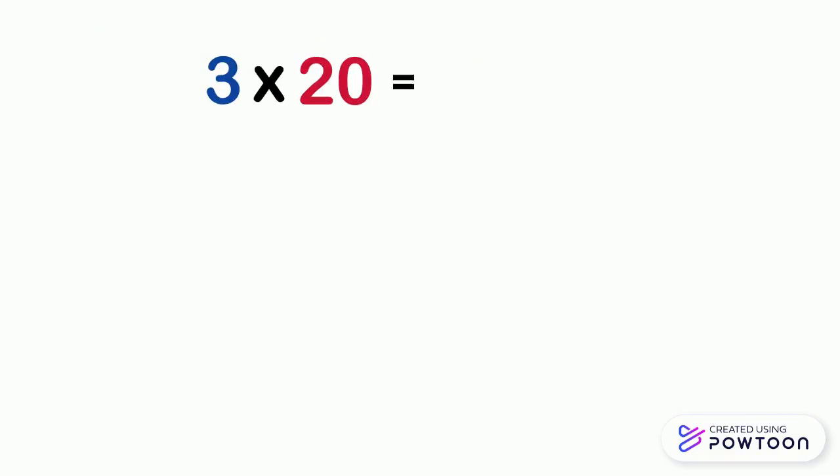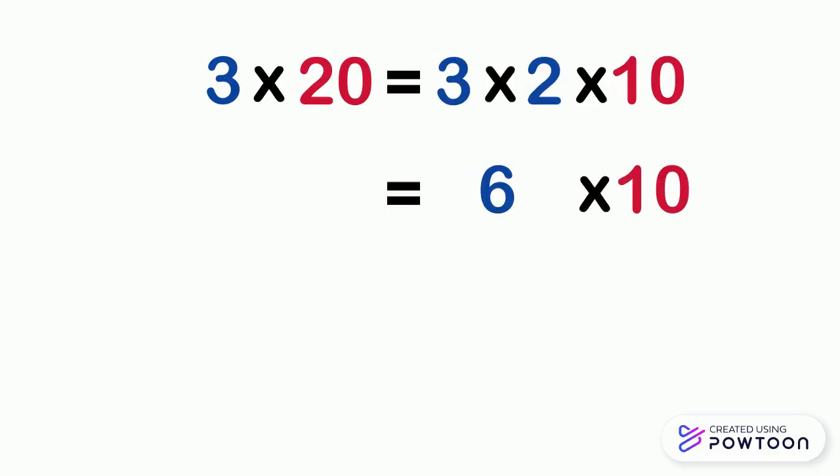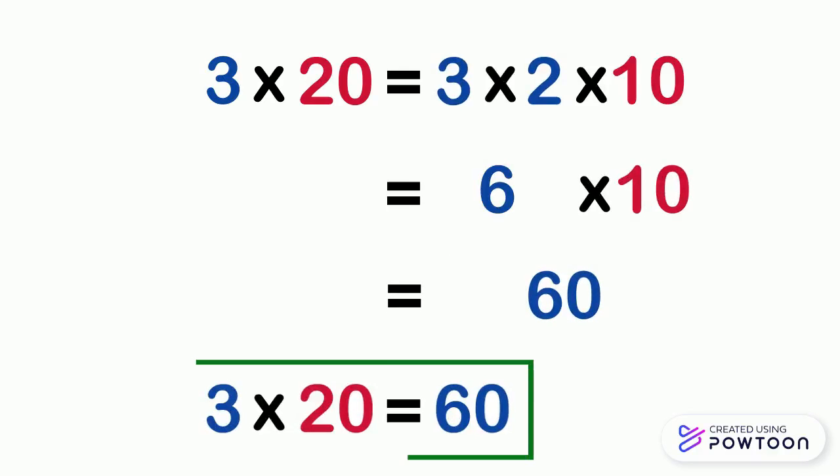Another method to multiply 3 by 20, we know that 20 is 2 times 10, so 3 times 20 equals 3 times 2 times 10. 3 times 2 equals 6, then multiply 6 by 10, it is 60, so 3 times 20 equals 60.